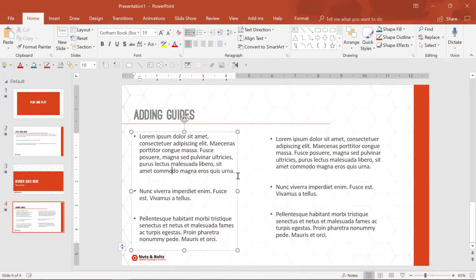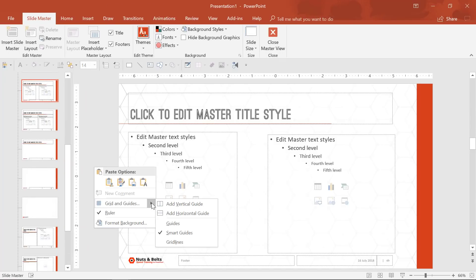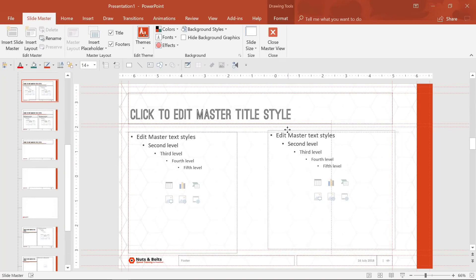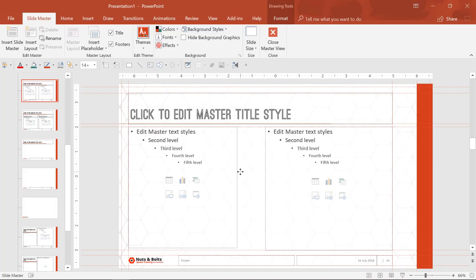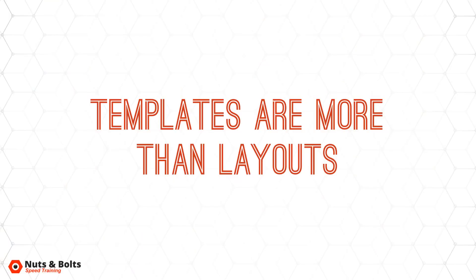Number 9: add guides around the placeholders in your slide master to maintain consistency. Whenever I create a template in PowerPoint, I like to add guides around the placeholders on my parent slide layout. That way if I accidentally nudge something, or if I want to make things easier to align in normal view, I can turn those on again and see where everything is supposed to be placed.